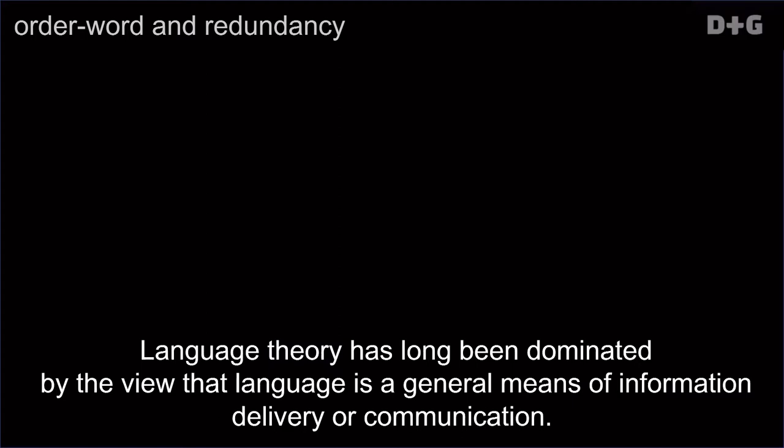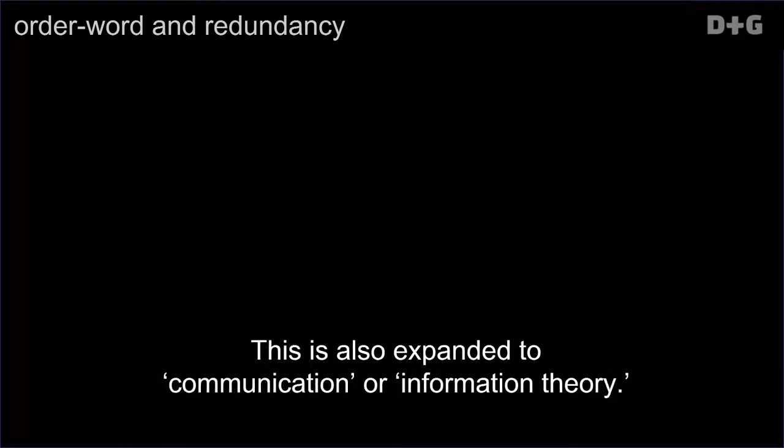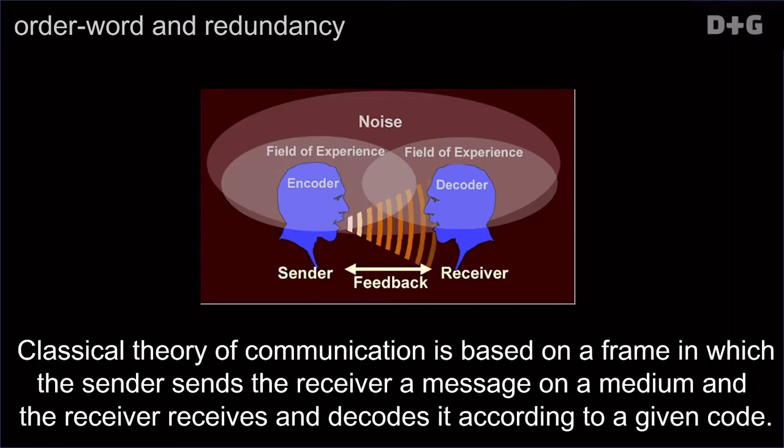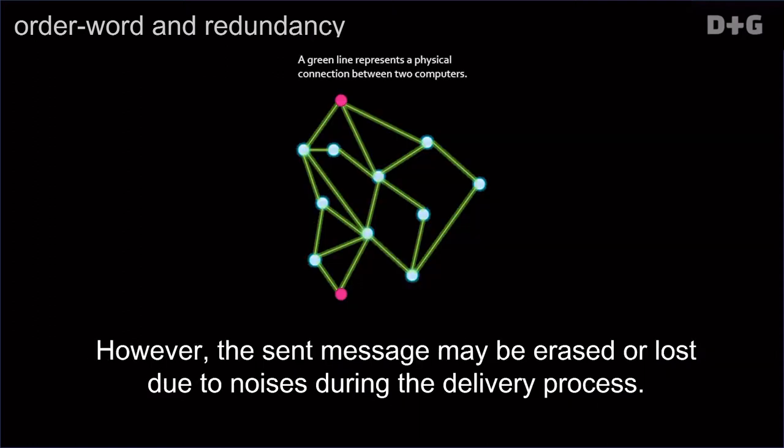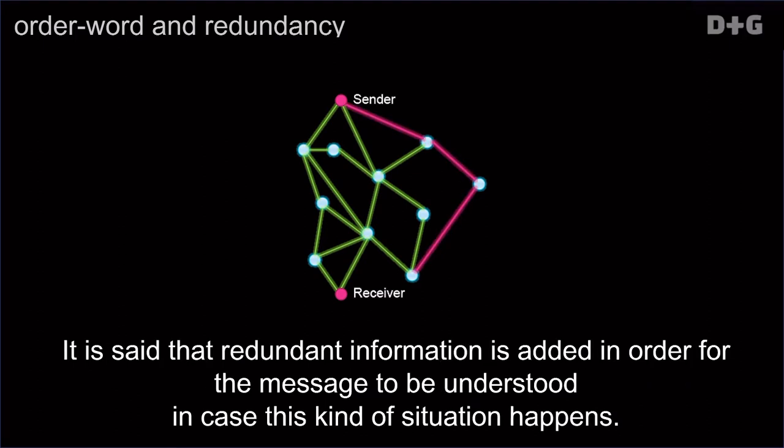Language theory has long been dominated by the view that language is a general means of information delivery or communication. This is also expanded to communication or information theory. Classical theory of communication is based on the frame in which the sender sends the receiver a message on a medium, and the receiver receives and decodes it according to a given code. However, the sent message may be erased or lost due to noises during the delivery process. It is said that redundant information is added in order for the message to be understood in case this kind of situation happens.